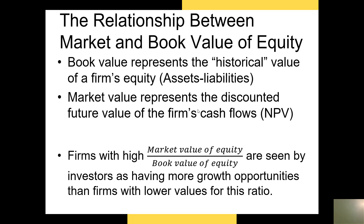In finance, we typically deal with market valuation rather than what's listed on the firm's balance sheet. There is a very important relationship between the market value and book value of equity: the market-to-book ratio, which is simply market value of equity divided by book value of equity. The higher this ratio, the more investment opportunities investors see for the firm. Typically, market-to-book ratios are between 1.5 and 3. If you have an IPO firm or a firm with great growth prospects, it might have a market-to-book ratio as high as 5 or 10.